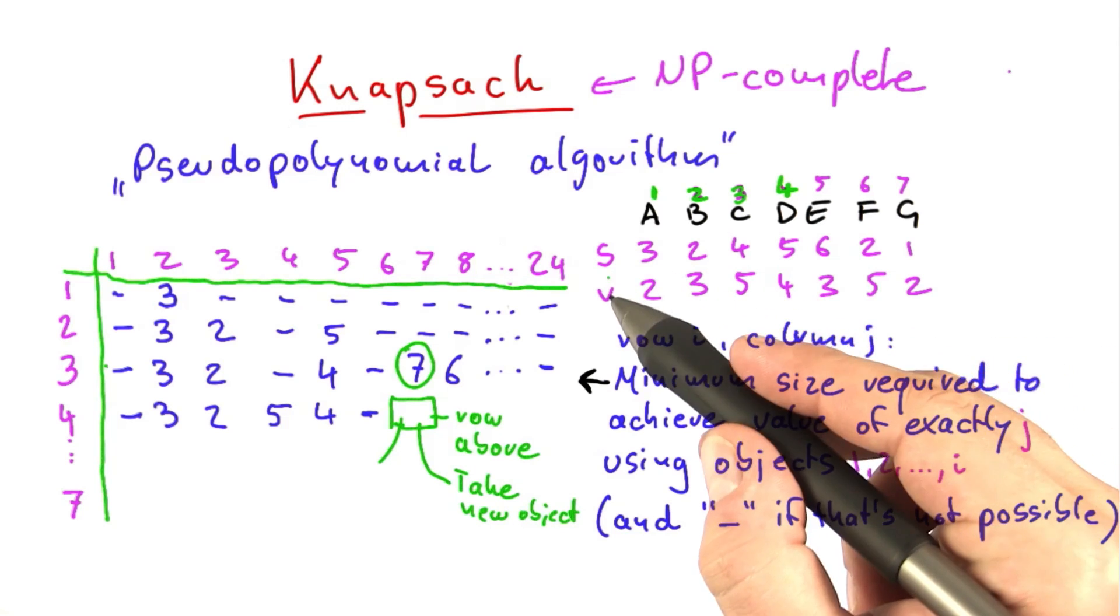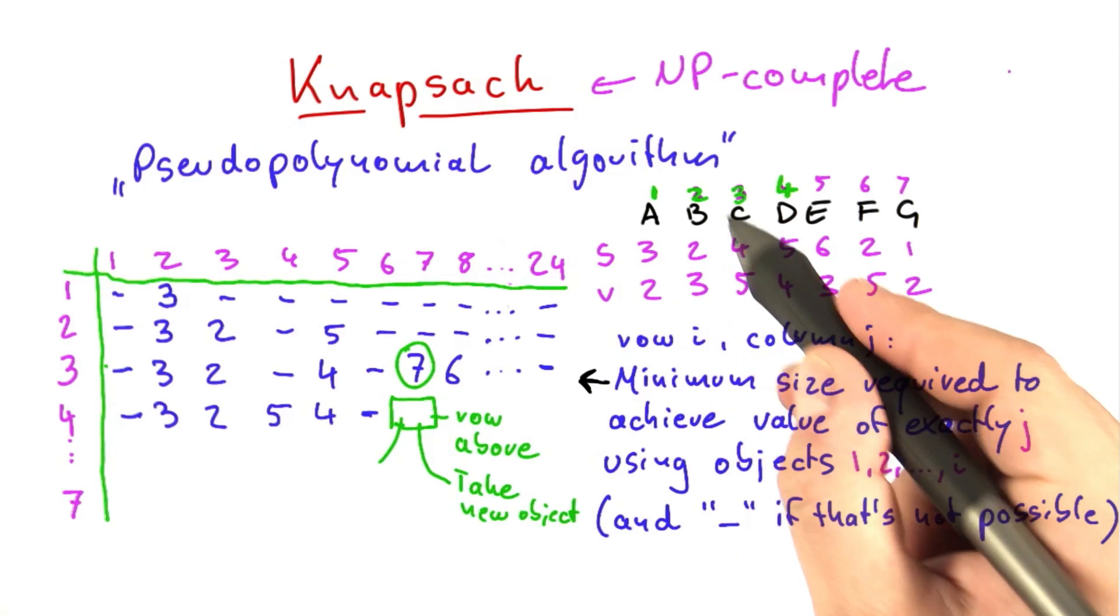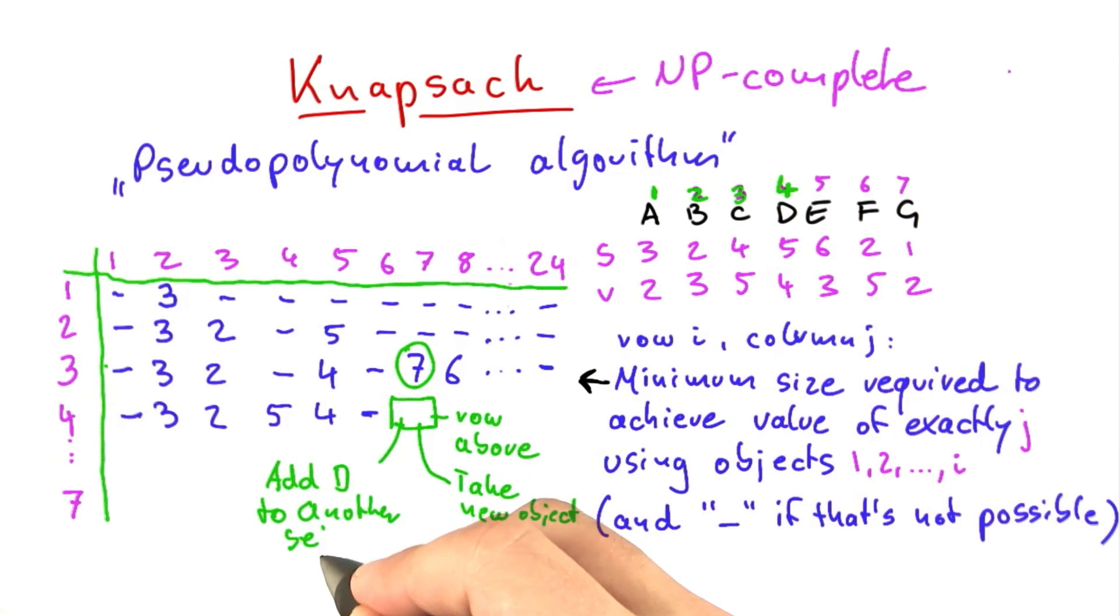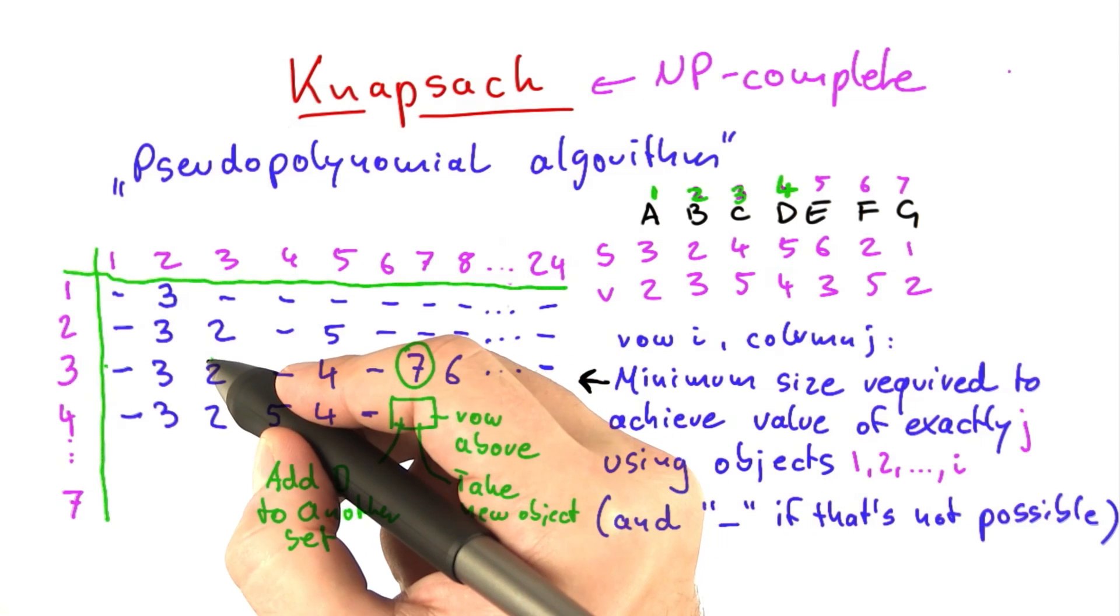we could try to achieve a value of 3 using the objects we had in there before and then add d to it. So add d to another set, and that is a set of size 3.